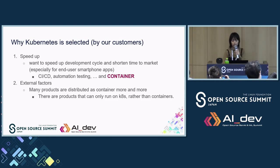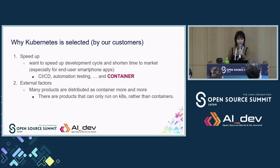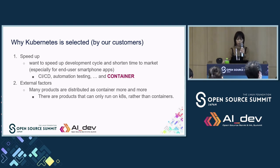Why is Kubernetes selected by our customers? There are mainly two reasons. One is speed up — our customers want to speed up the development cycle and shorten the time to market, especially for end-user smartphone applications. The other is that recently many products are distributed as containers, and there are products that can only run on Kubernetes. That's why Kubernetes is selected.